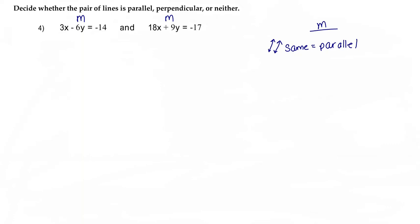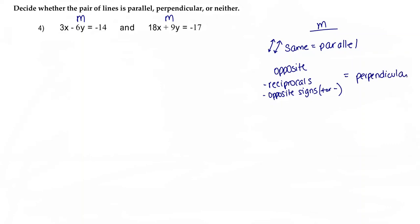If these two slopes are the exact opposite — meaning they are reciprocals and they are opposite signs, plus or minus — then they're going to be perpendicular, and on the graph they're going to look like that. This is going to be a right angle. And then if they are not the same and they're not opposite exactly, then they're going to be neither.